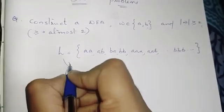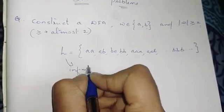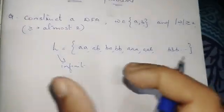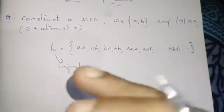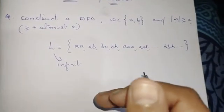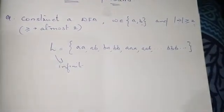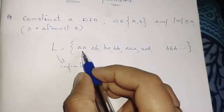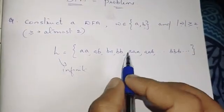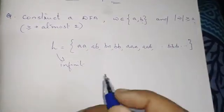This language is infinite. Now we have a DFA construction. If the string length condition is not met, it is rejected. If the string length is valid, we build the DFA.